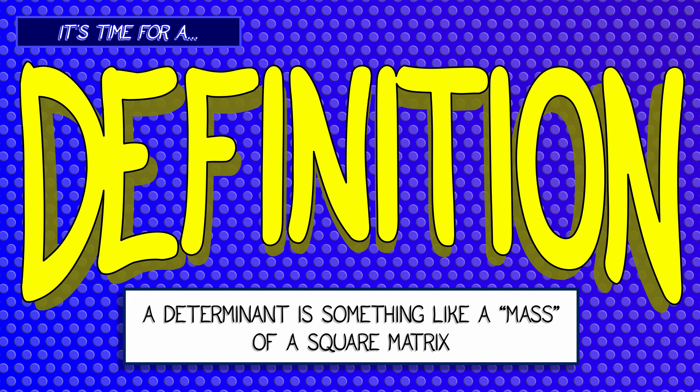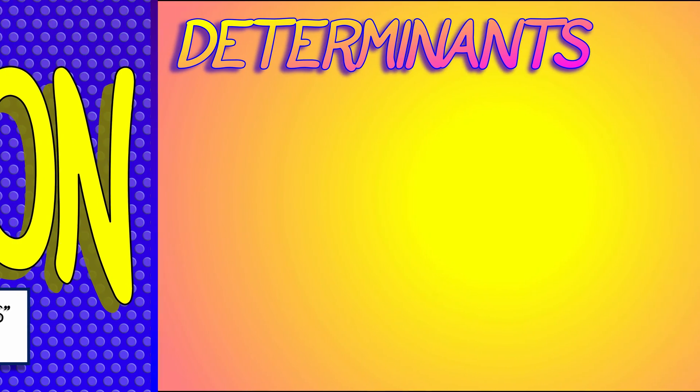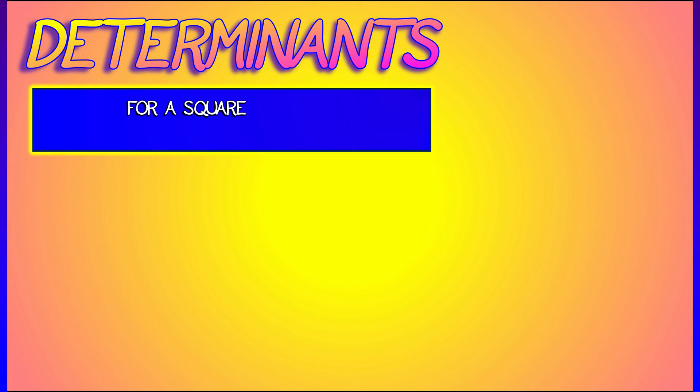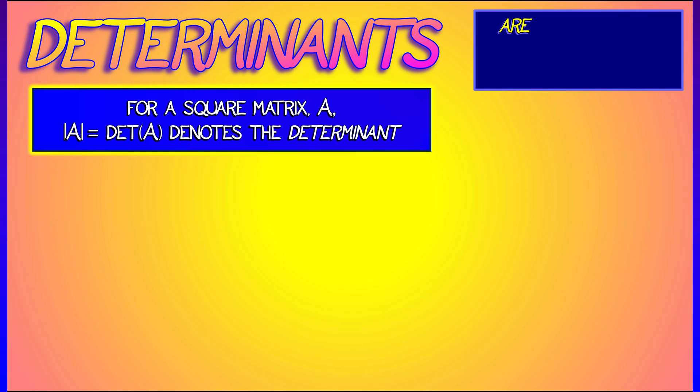This is a scalar, something like a mass though not necessarily positive. So given a square matrix, call it A, the determinant is often denoted as A with absolute value signs around it, and it is a scalar. What it is is a little bit hard to define, so we're just going to do some explicit examples.